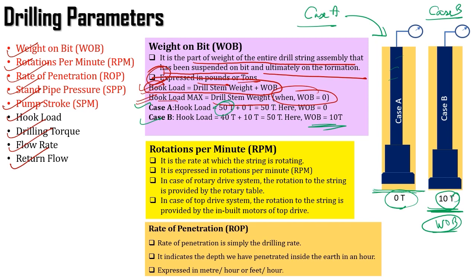The second drilling parameter is RPM, or rotations per minute. It is the rate at which the string is rotating. That means when we are drilling, we are obviously rotating our string, and the rate at which that particular string is being rotated is our RPM.